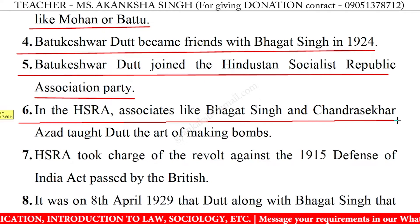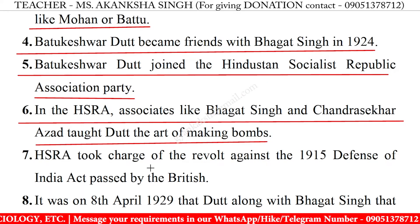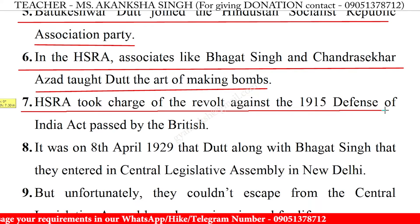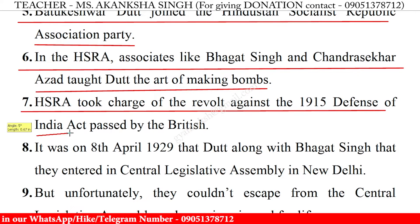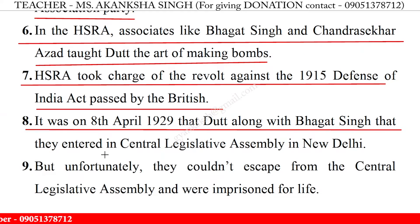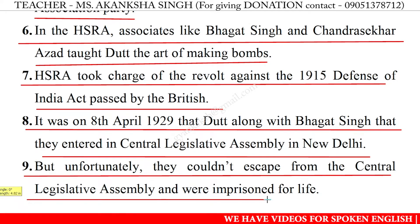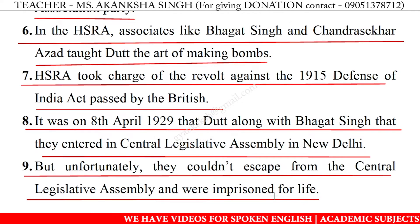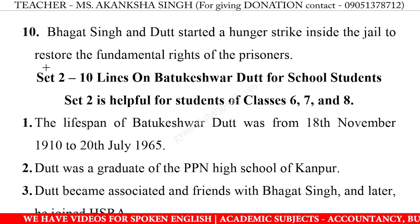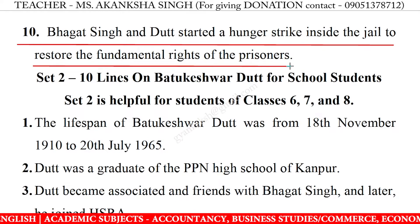6. In the HSRA, associates like Bhagat Singh and Chandrasekhar Azad taught Dutt the art of making bombs. 7. HSRA took charge of the revolt against the 1915 Defence of India Act passed by the British. 8. It was on 8 April 1929 that Dutt along with Bhagat Singh entered the Central Legislative Assembly in New Delhi. 9. Unfortunately, they couldn't escape from the Central Legislative Assembly and were imprisoned for life. 10. Bhagat Singh and Dutt started a hunger strike inside the jail to restore the fundamental rights of the prisoners.